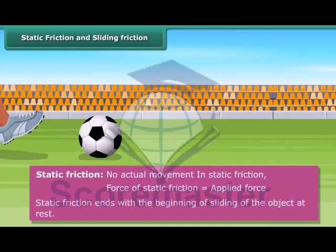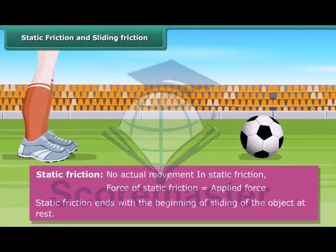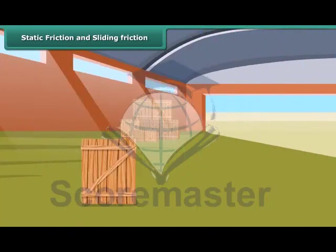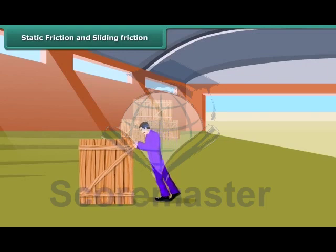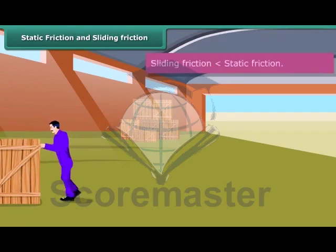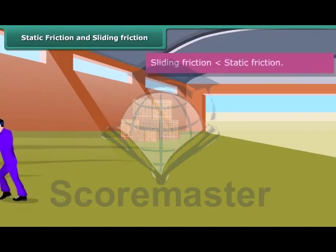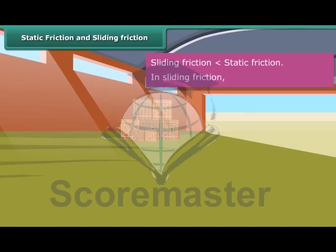When we push the ball, it starts moving. The frictional force present when one body moves slowly or slides over another body is known as sliding friction. Once a body slides, the sliding friction is reduced a little — it is less than the static friction. In sliding friction, the force of sliding friction is equal to the constant pull force.